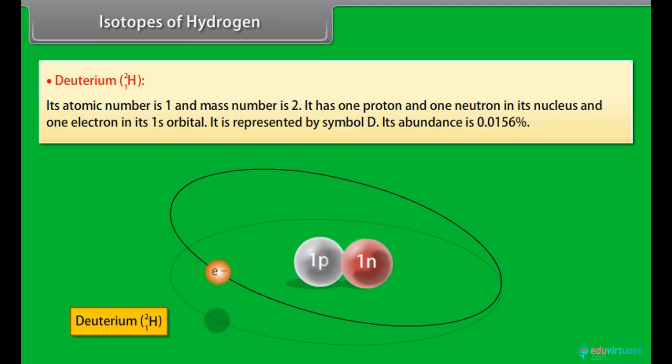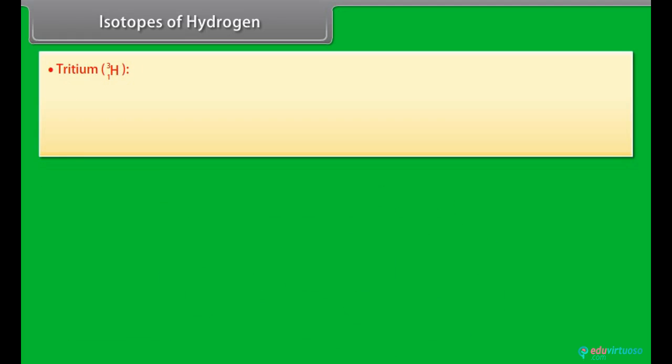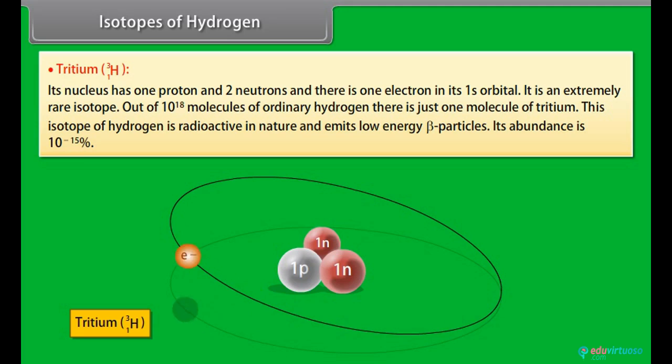Its abundance is 0.0156%. Tritium - Its nucleus has one proton and two neutrons and there is one electron in its 1s orbital. It is an extremely rare isotope. Out of 10 to the power 18 molecules of ordinary hydrogen, there is just one molecule of tritium. This isotope of hydrogen is radioactive in nature and emits low-energy beta particles. Its abundance is 10 raised to the power minus 15%.